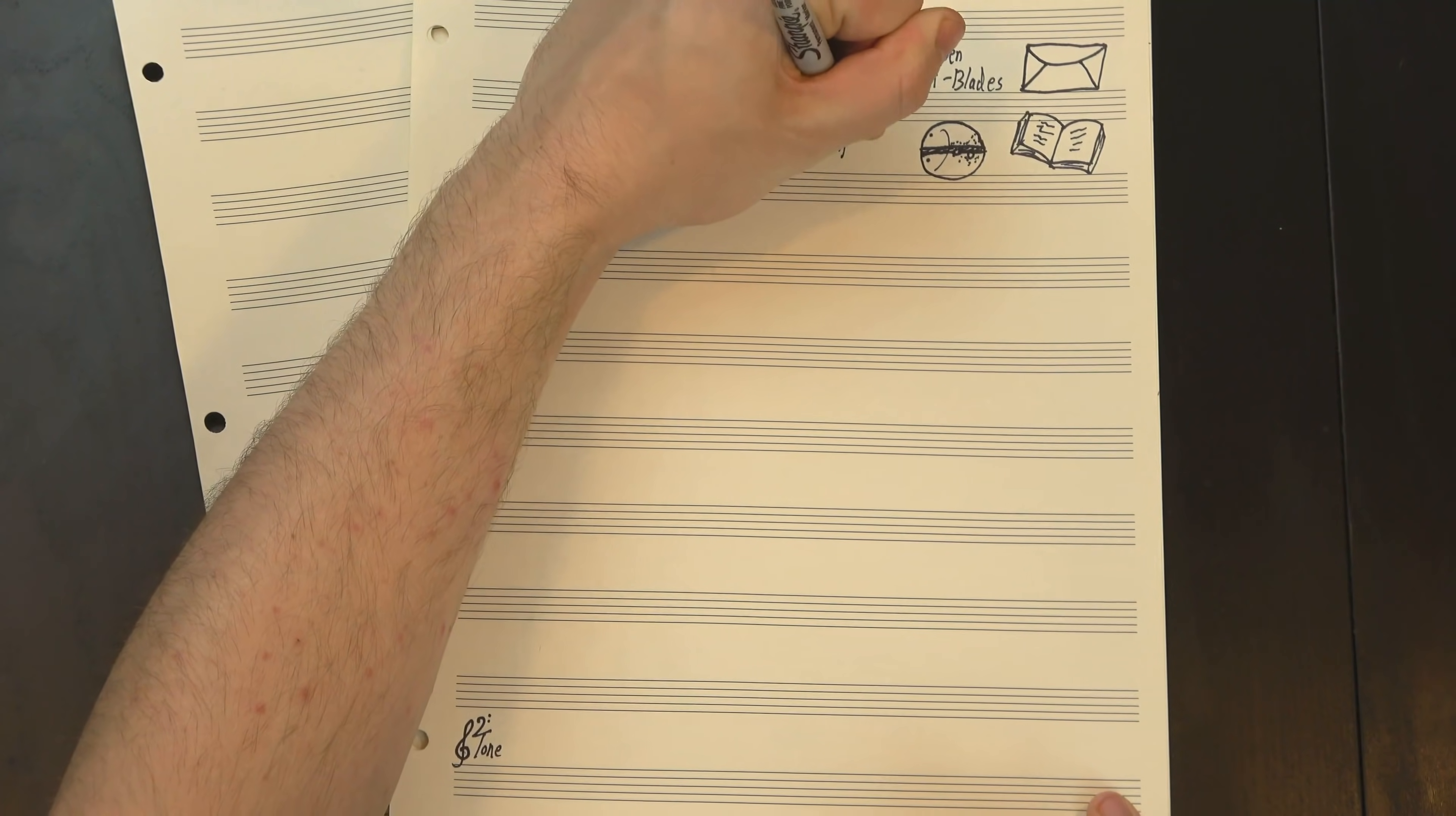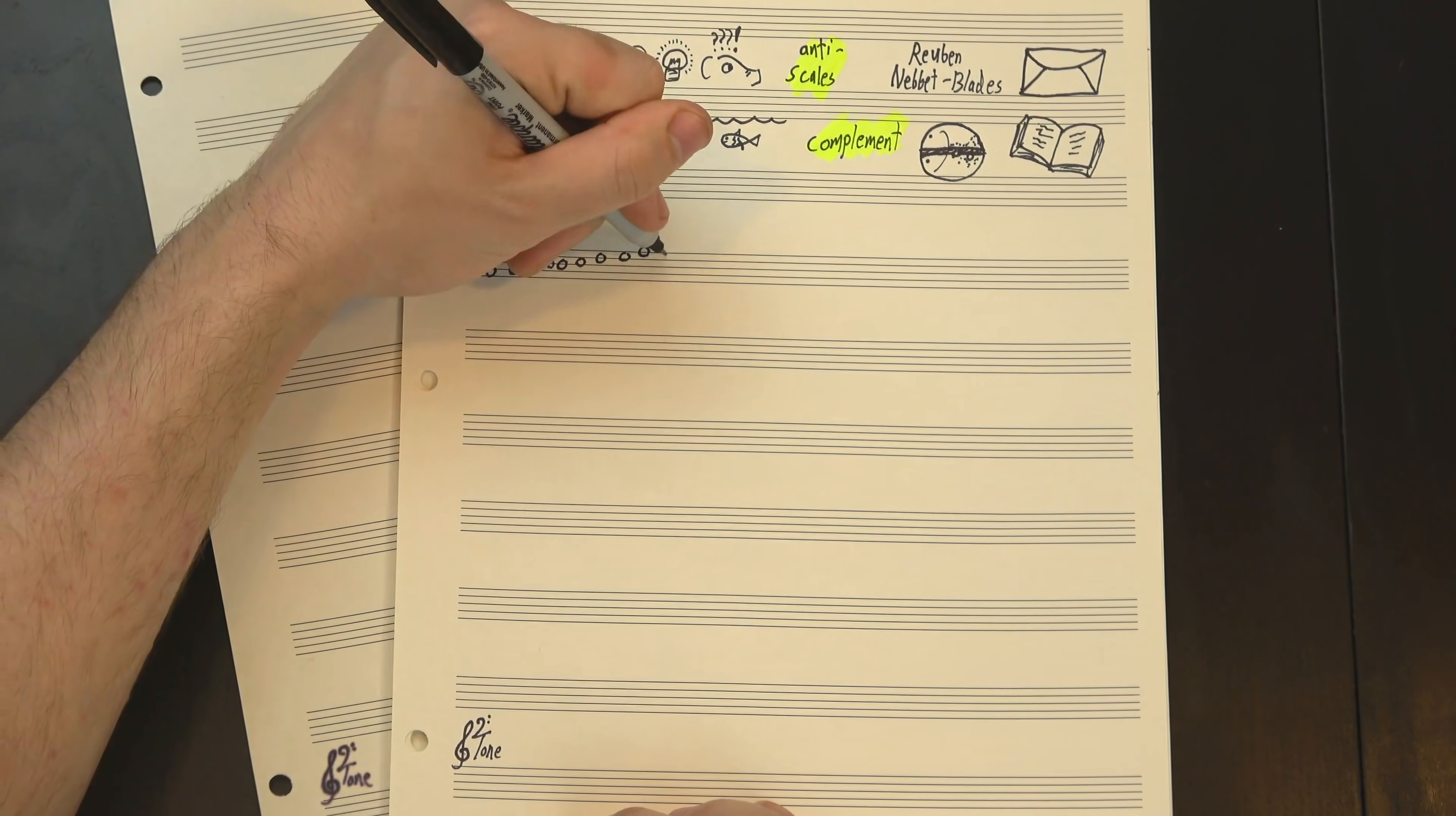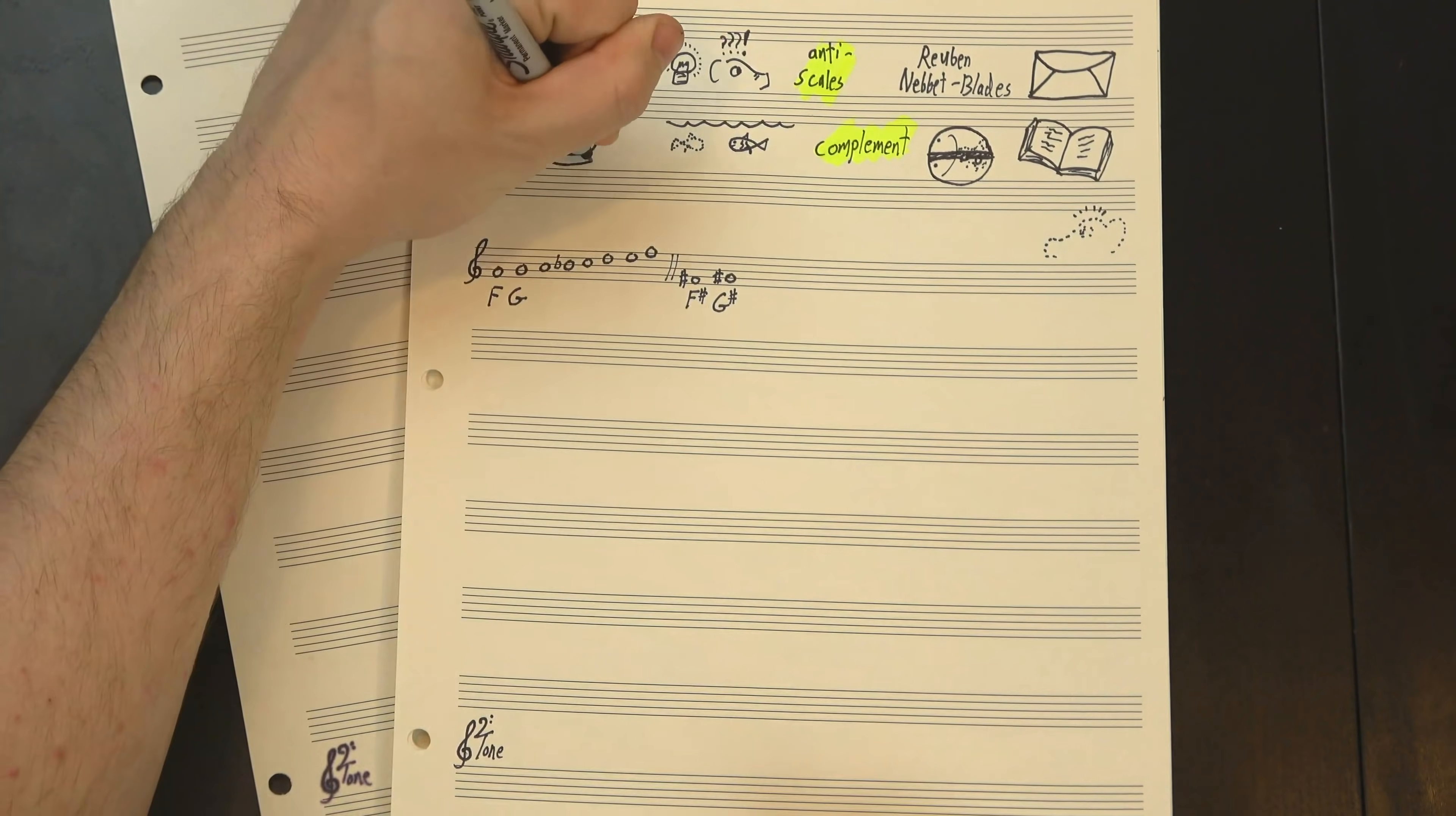They're pretty closely related to what's called a complement, which is a scale made out of all the notes that aren't in a different scale. So if we take F major, we have F, but we don't have F-sharp, so we'll put that over here to keep track. Then we have G, but no G-sharp, so that goes on our list too.